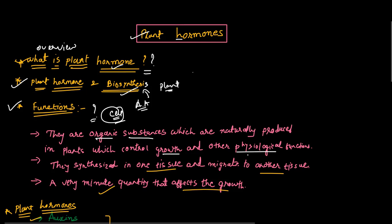This topic is also important for competitive exams like CSIR NET. For more details on each hormone — including the chemical forms of auxins, biochemical pathways, and other growth regulators such as auxin, gibberellin, cytokinin, ethylene, and abscisic acid — separate detailed videos are available for each hormone.